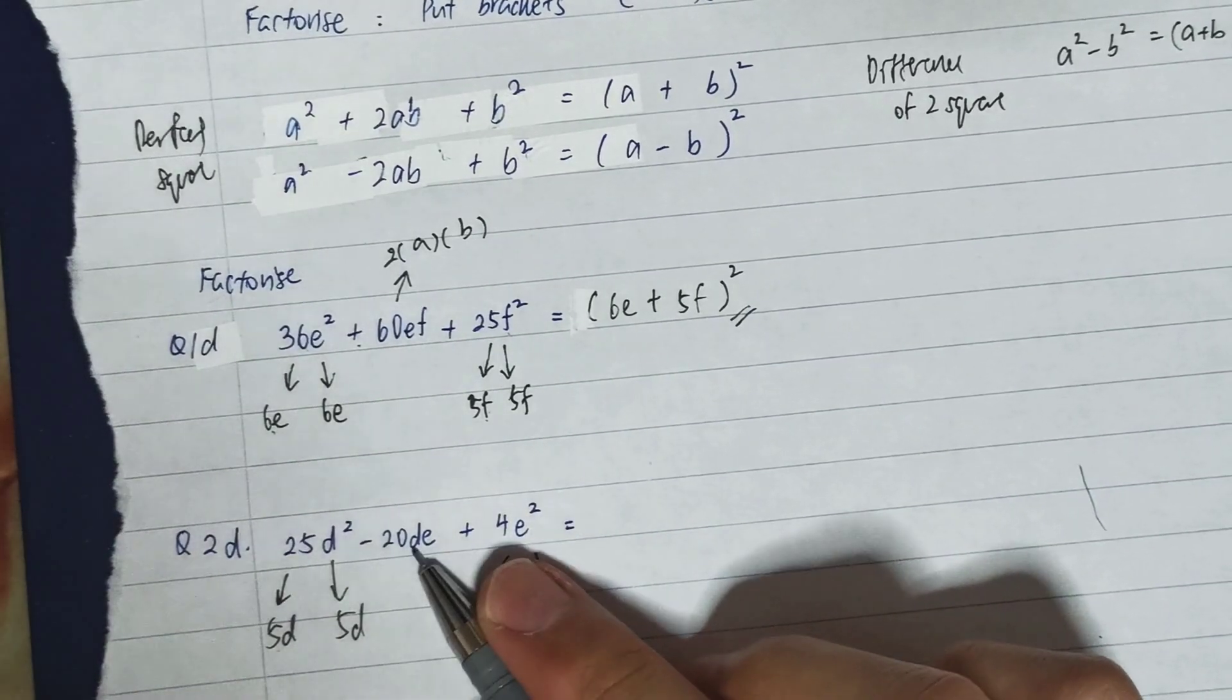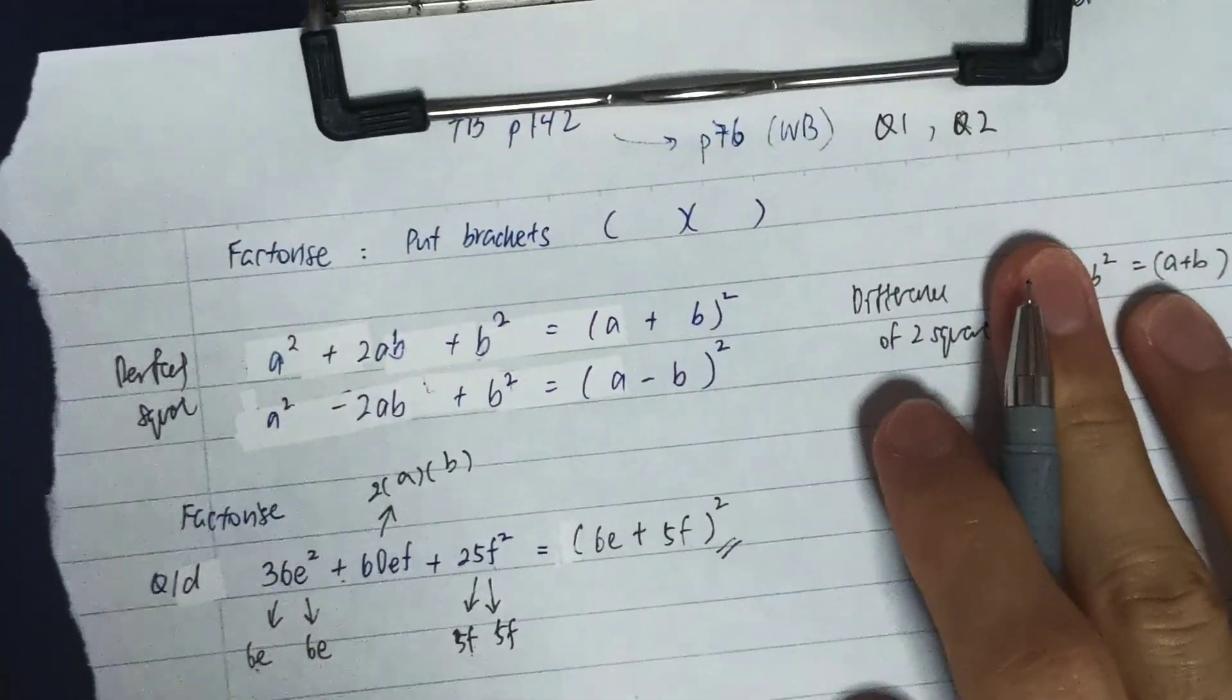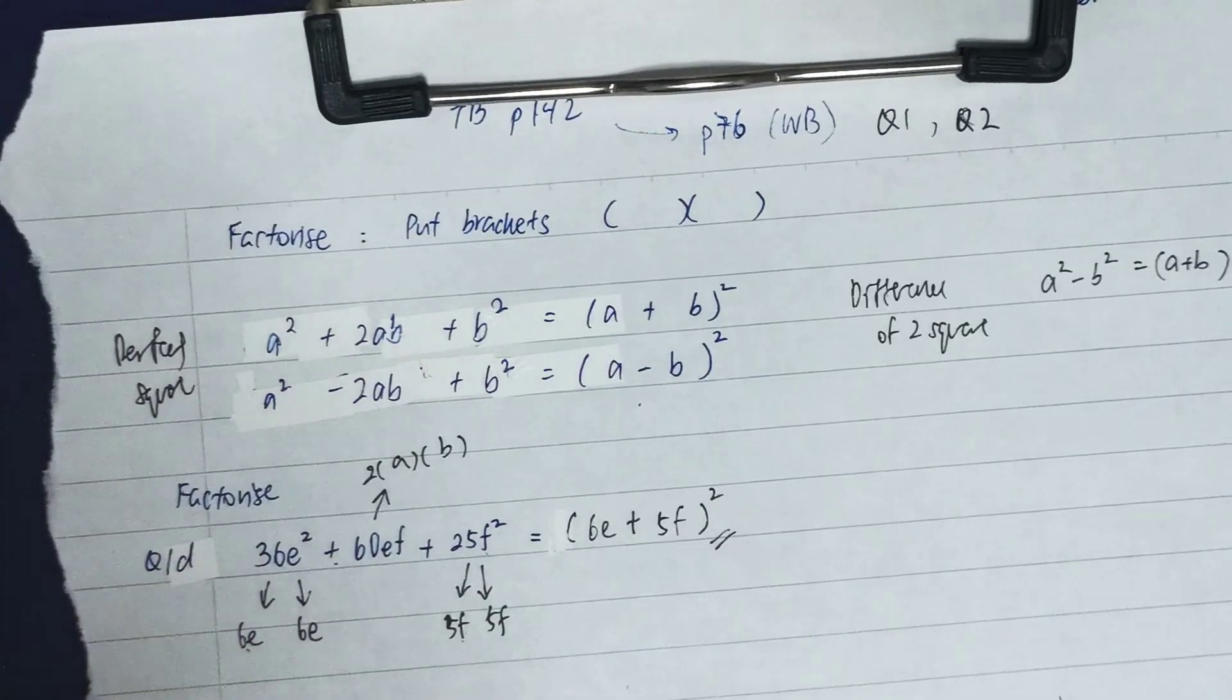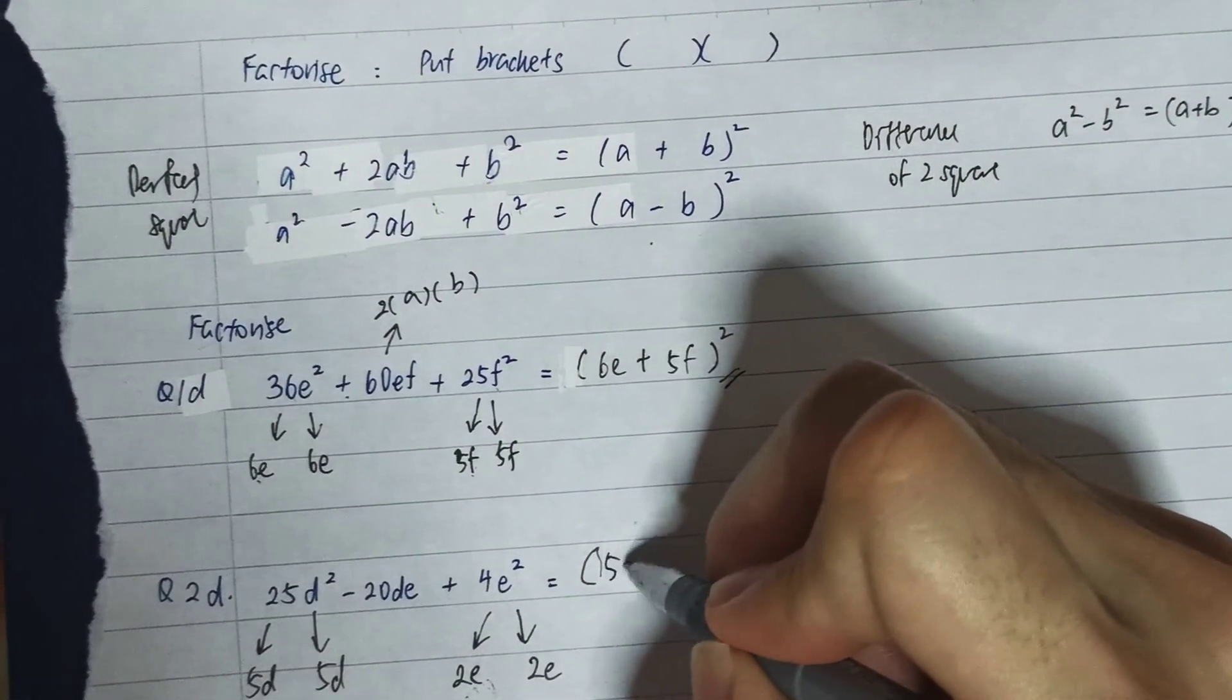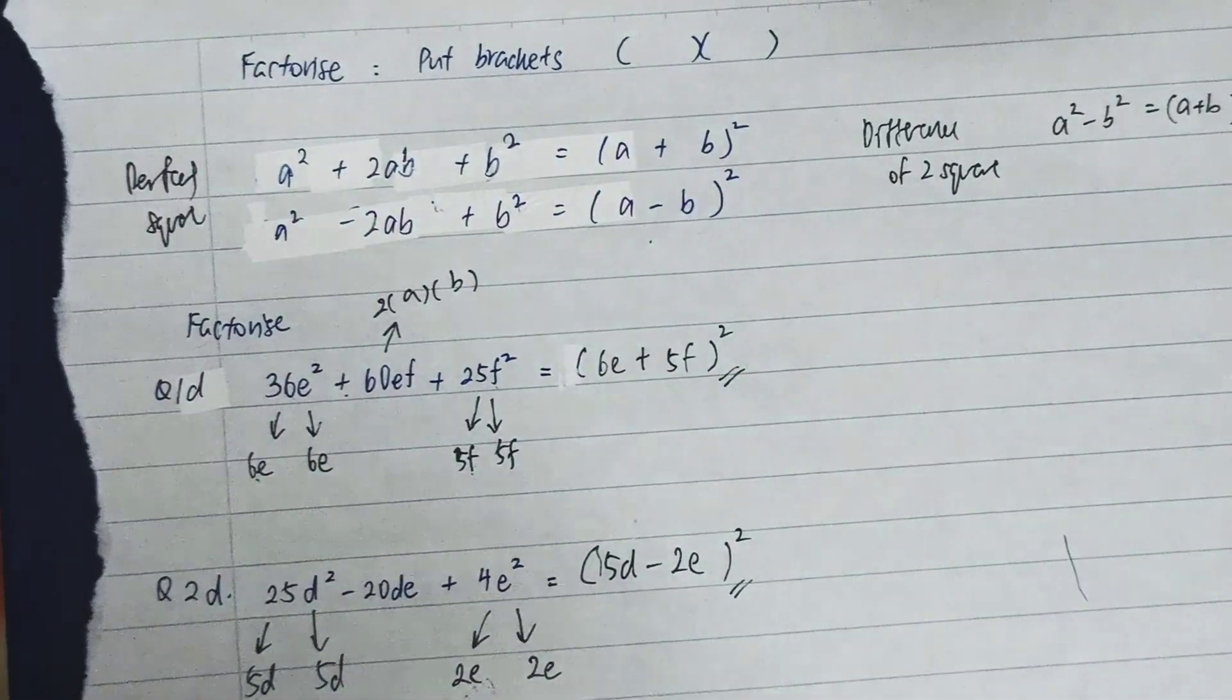Which means I can write it. So that means when I factorize it, it will be (a - b)². So (5d - 2e)². This one will be my factorized answer.